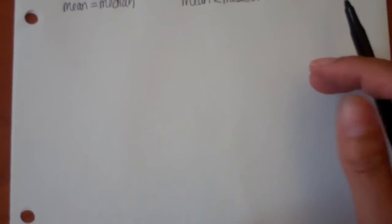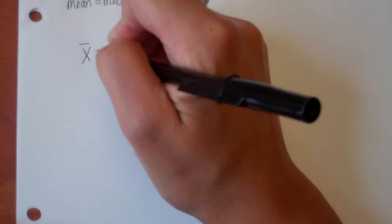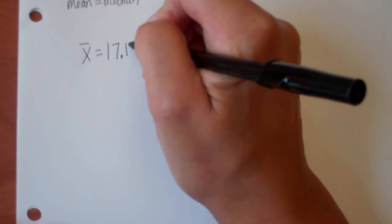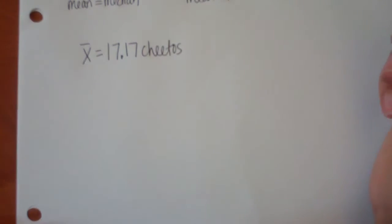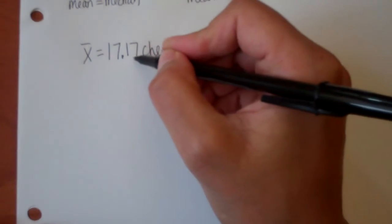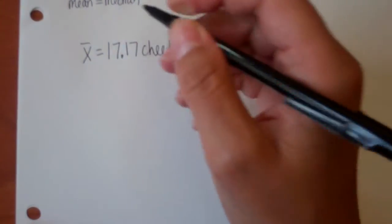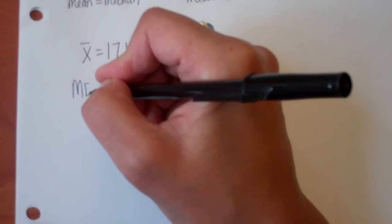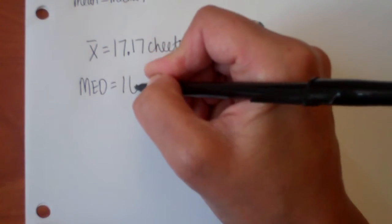Okay, I hope you are back. So you should have found that our mean was 17.17 Cheetos. Let's round to that second decimal place. And I know the whole .17 Cheetos, but we can always measure them. Our median is going to be 16 Cheetos.